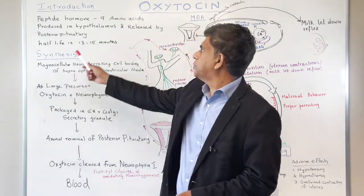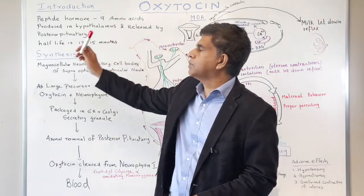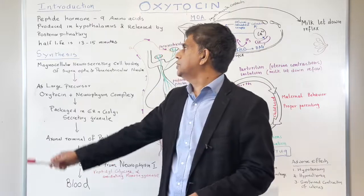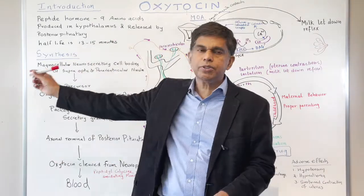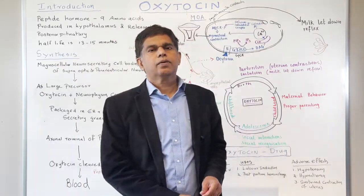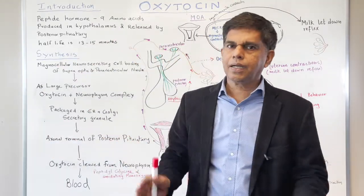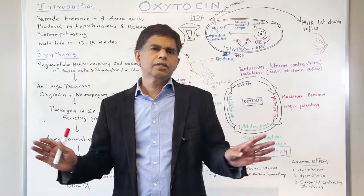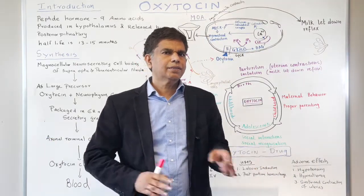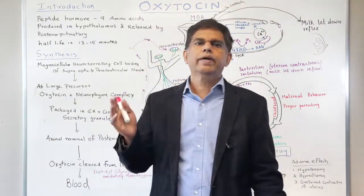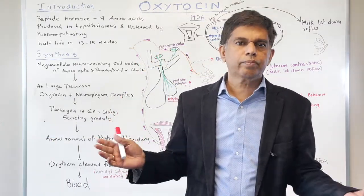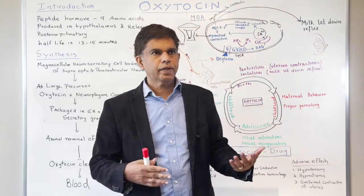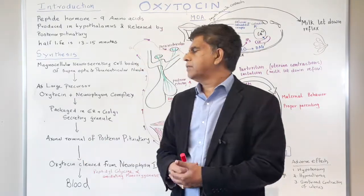Where is it produced? In the hypothalamus and released into the posterior pituitary. The half-life is around 12 to 13, or 13 to 15 minutes. That's why it works very well in pregnancy and labor induction.